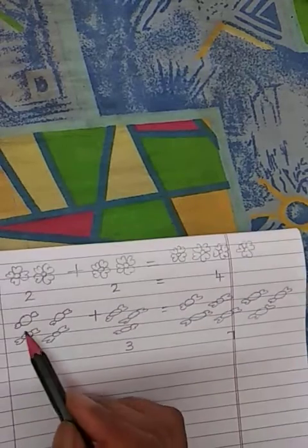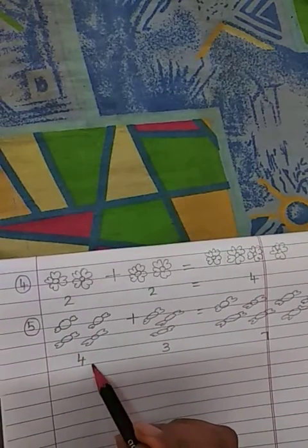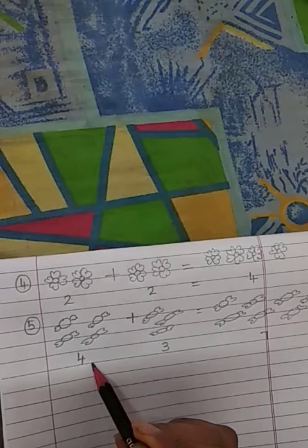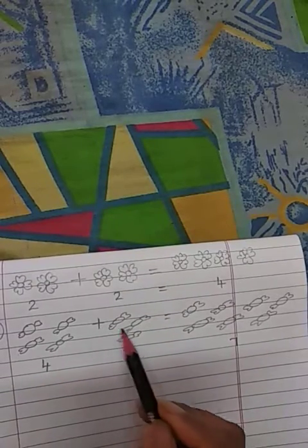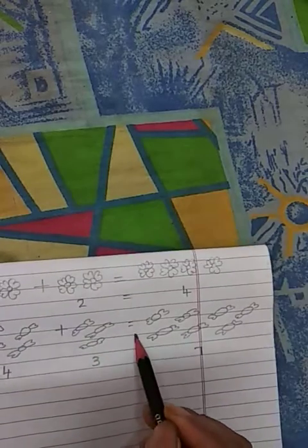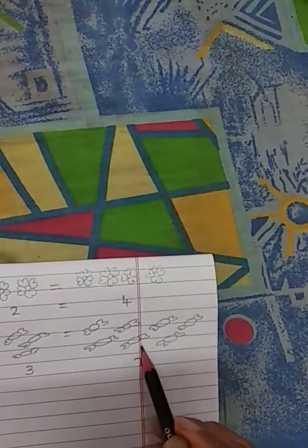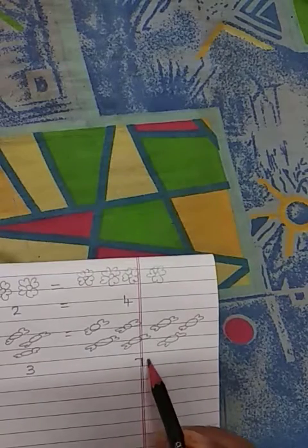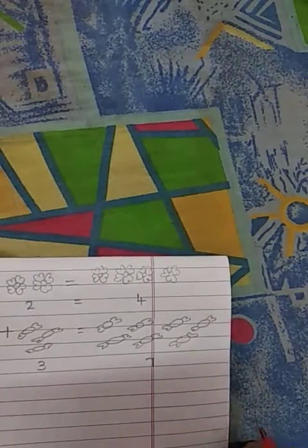Now again see here. 1, 2, 3, 4. 4 chocolates, that is 4 toffees are there. When we add those 4 with 3 here, 1, 2, 3. So it will be 1, 2, 3, 4, 5, 6 and 7. So in all, it will be 7 toffees.